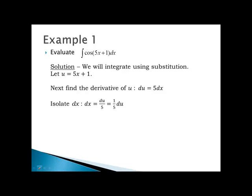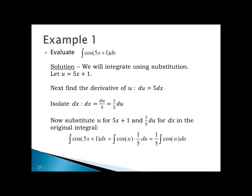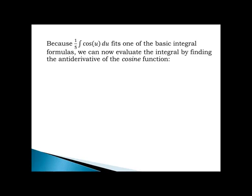I'll isolate dx by solving that equation for dx, getting dx equals du divided by 5, or one-fifth times du. Now I'll substitute u for 5x plus 1 and one-fifth du for dx in the original integral. My integral changes from cosine evaluated at 5x plus 1 with respect to x, to the integral of cosine of u times one-fifth du, or one-fifth times the integral of cosine of u with respect to u. Because this fits one of our basic integral formulas, I can evaluate it by finding the antiderivative of the cosine function.